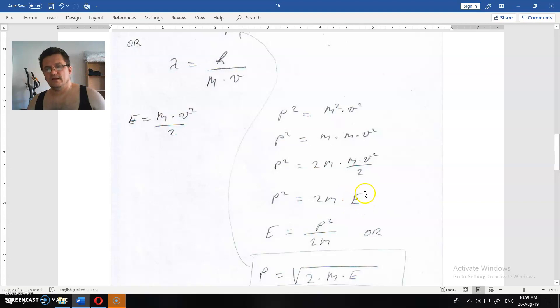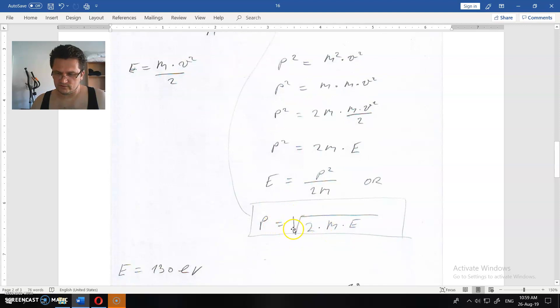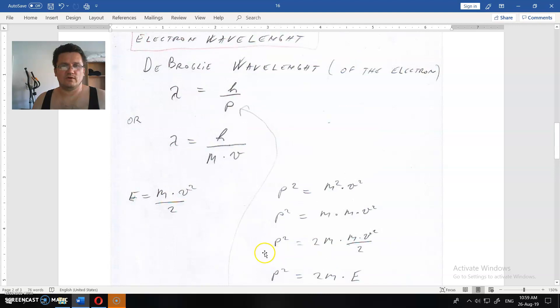And from here, E is equal to p² divided by 2m. This is the relation between kinetic energy and momentum. From here, we could rewrite momentum, or should I say value of the momentum or intensity. Momentum is equal to square root of 2 times mass of the object times its energy.